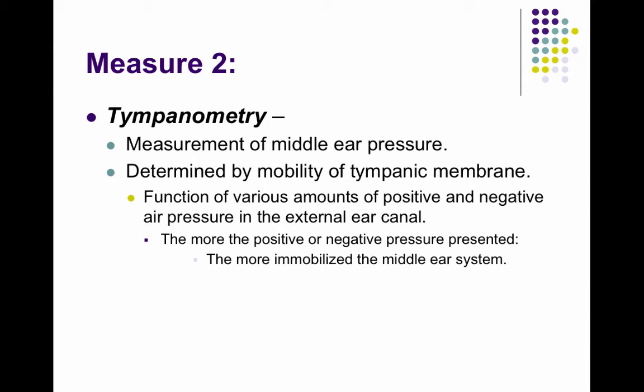Tympanometry is a measure of different middle ear pressures and it's determined by the mobility of the tympanic membrane. As a function of various amounts of positive and negative ear pressure, we measure the admittance — how much energy gets through.